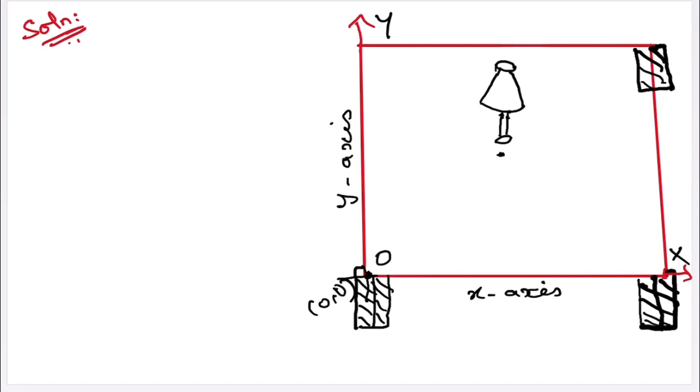Now, measure the distance from the x and y-axis to the lamp. Then write the distance in terms of coordinates.